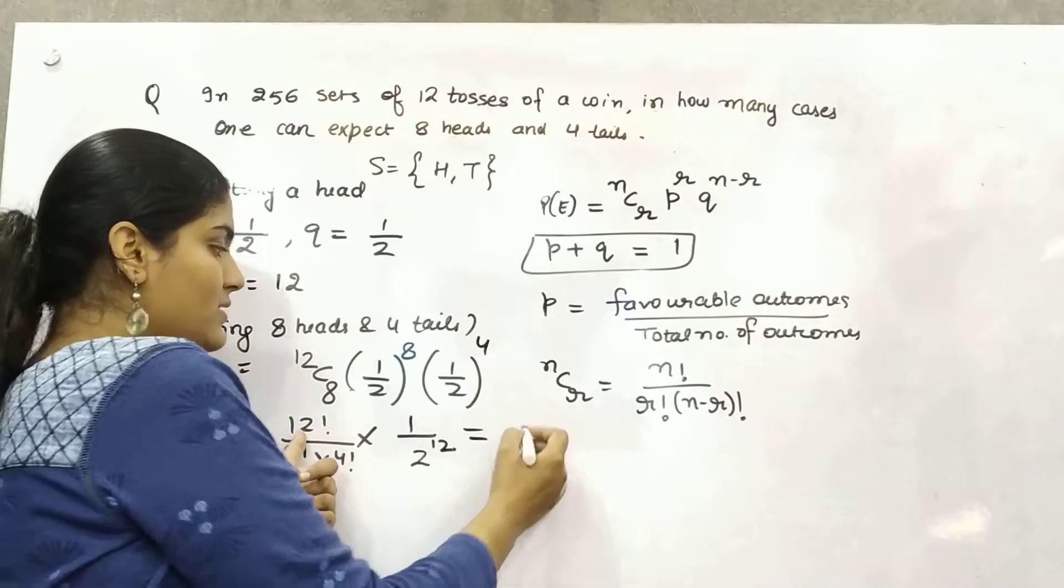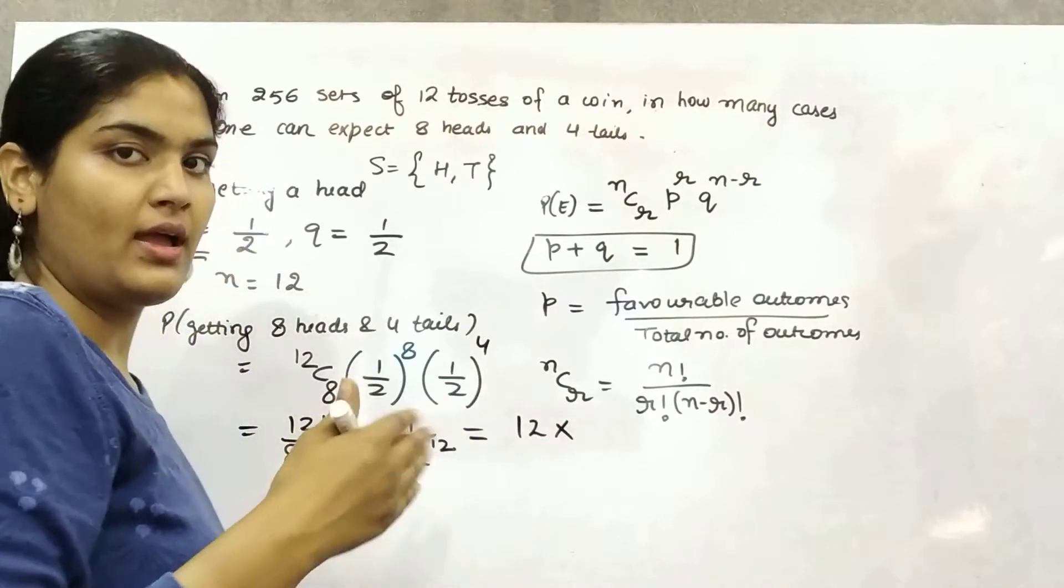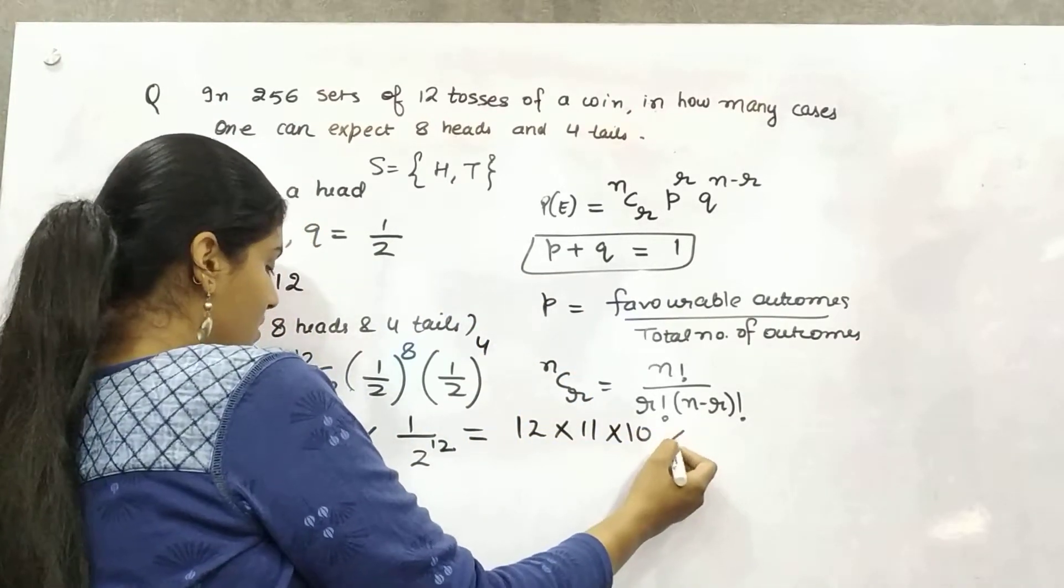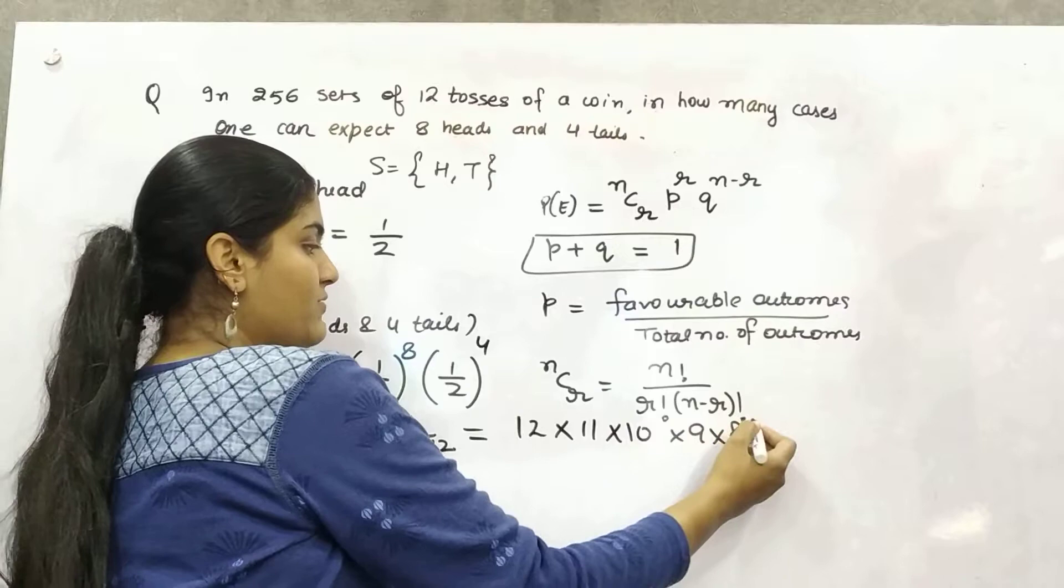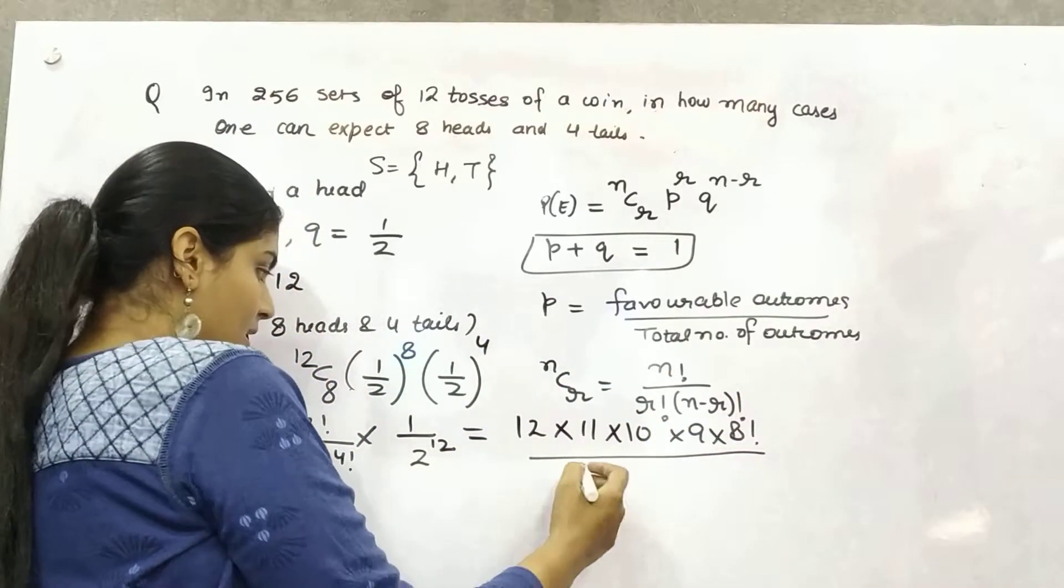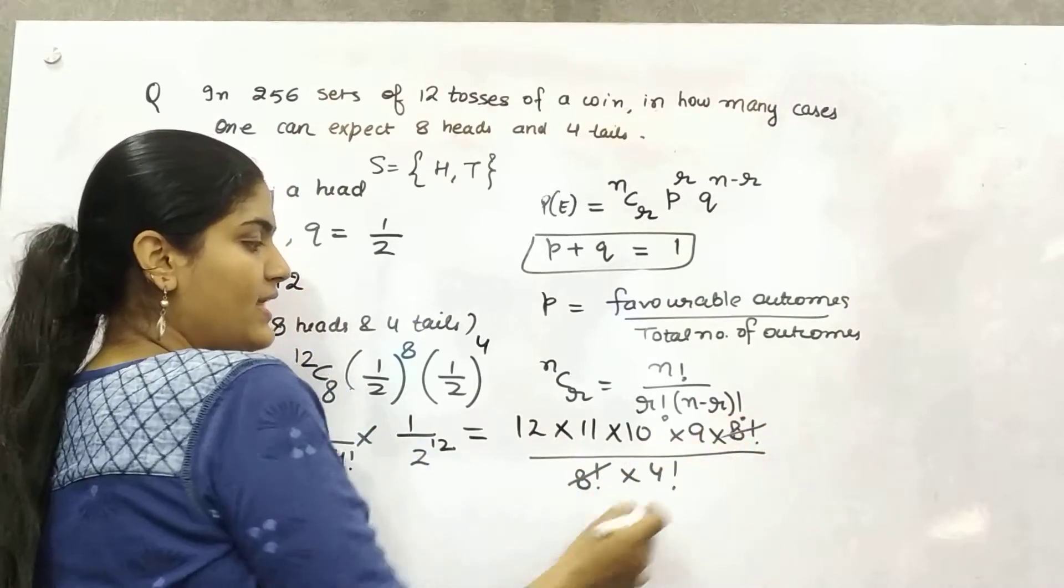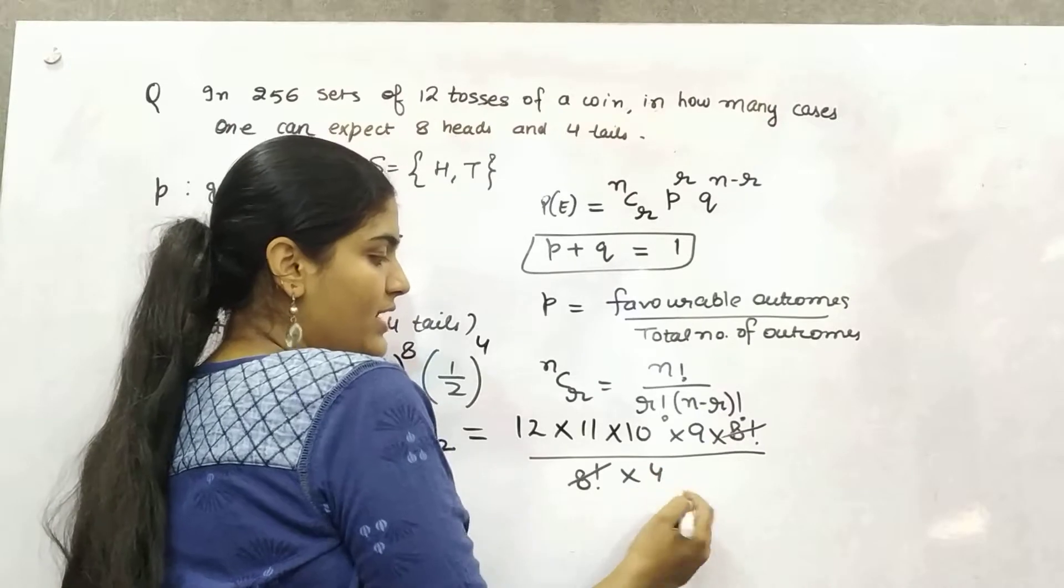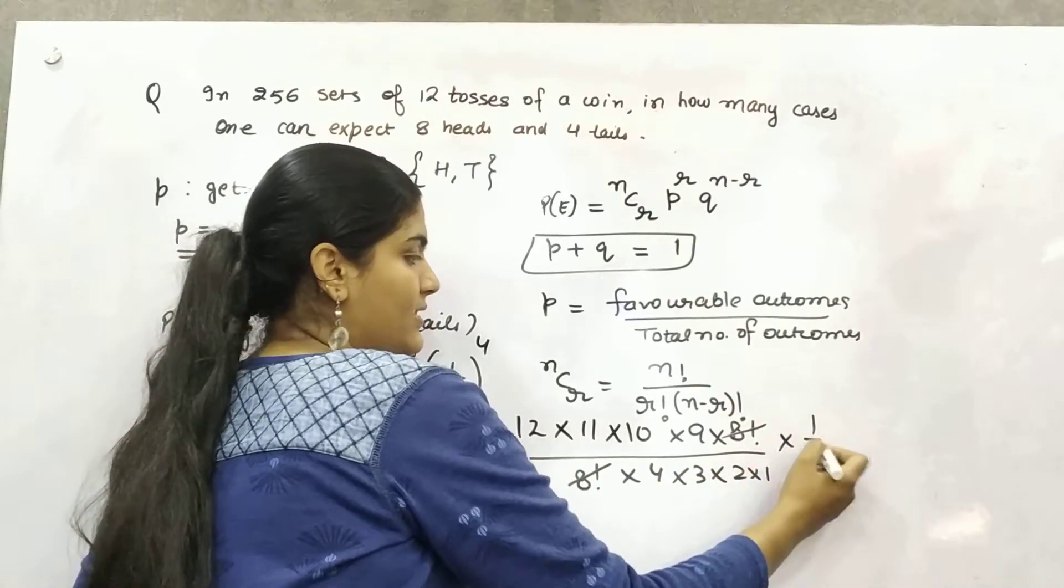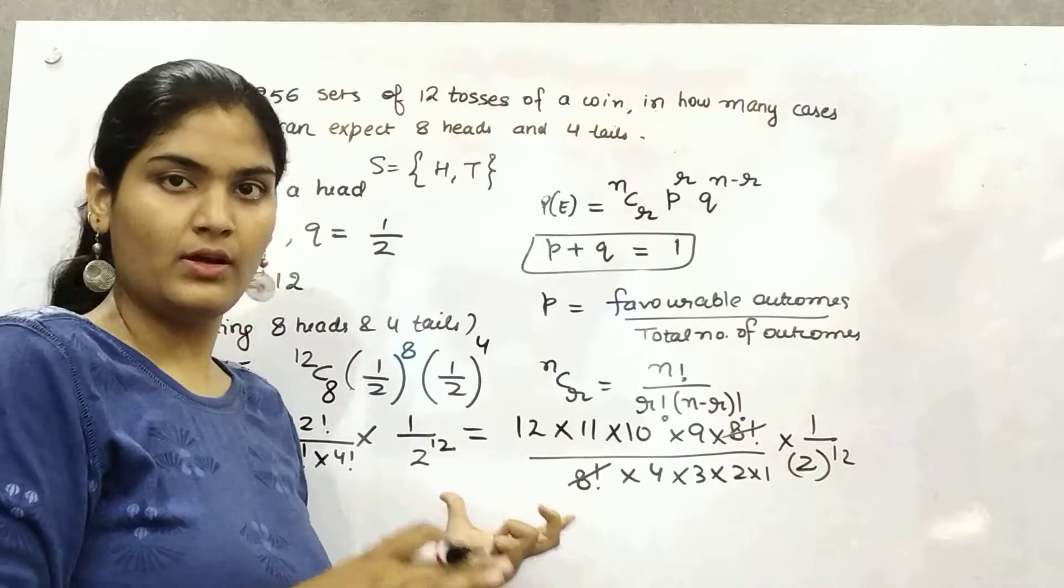Now, how you can solve it? You know how we solve factorials. Take it in descending order. 12, 11, 10, 9, 8 factorial. Whenever you will stop, you have to mark factorial. Then 8 factorial, 4 factorial. 8 is cancelled with 8. And similarly, you can write 4 factorial as 4 into 3 into 2 into 1. And this is 1 by 2 raised to power 12. And you can solve it.